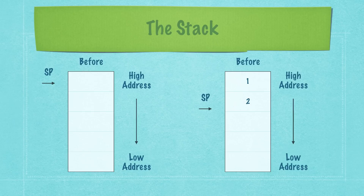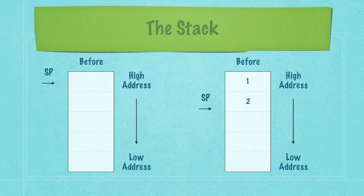A stack is implemented by keeping track of two pointers: the base pointer, which is the place in memory where the stack begins, and the stack pointer, which is the memory location of the top of the stack. Addresses are assigned to data either ascending or descending in value. If it ascends, we increase the stack pointer value; if it descends, we decrease it.